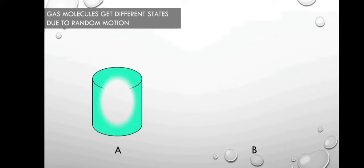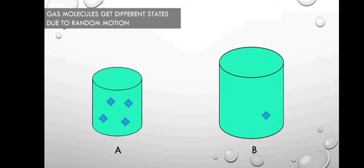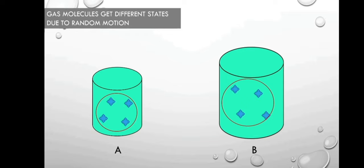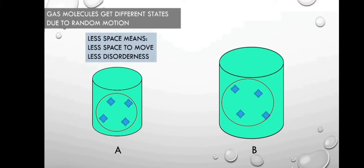Imagine this is a closed system. This is System A, and this is System B. There are 4 molecules of gas in each system, but the available space for molecules in Box A is smaller than in Box B. Over time, these molecules in System A and System B reach different states due to random motion. Because the gas molecules in each system have different space sizes, the gas molecules in System A are confined to a smaller space compared to molecules in System B.